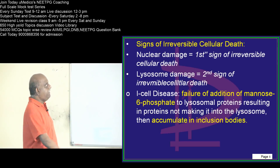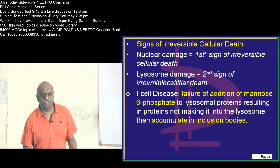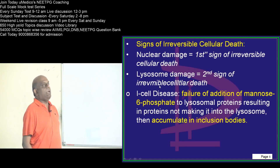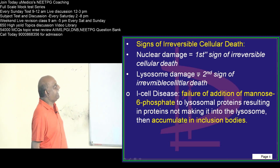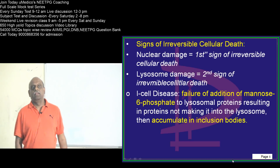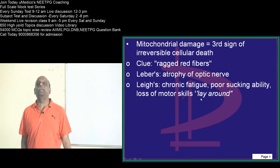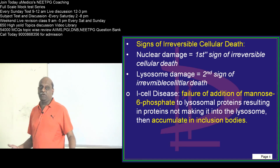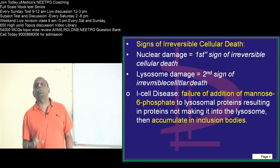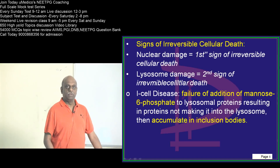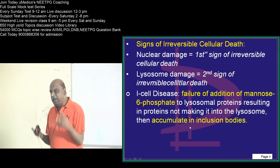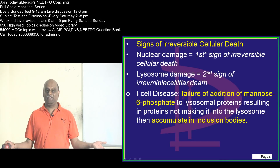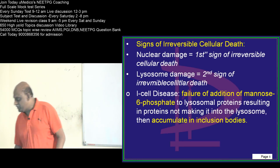Now let us talk about irreversible cellular death. A favorite MCQ in the NeatPG: what is the first sign of irreversible cell injury — lysosomal damage, mitochondrial damage, or nuclear damage? The answer is nuclear damage. The second sign is lysosomal damage, and the third sign is mitochondrial damage. Do you know what is meant by I-cell disease? There are mannose-6-phosphate molecules added to lysosomal proteins. If there is any failure in this addition, it leads to accumulation in the form of inclusion bodies, which is called I-cell disease.